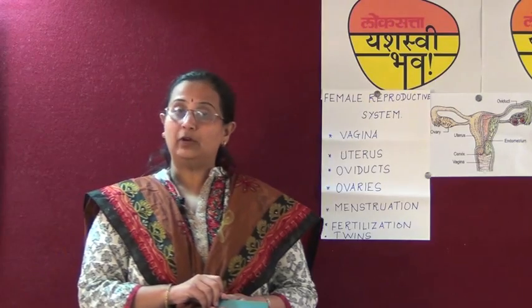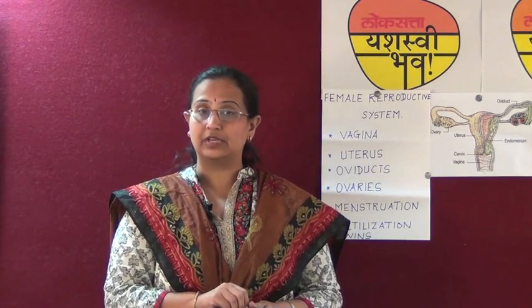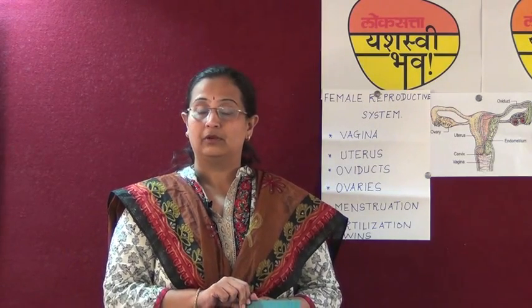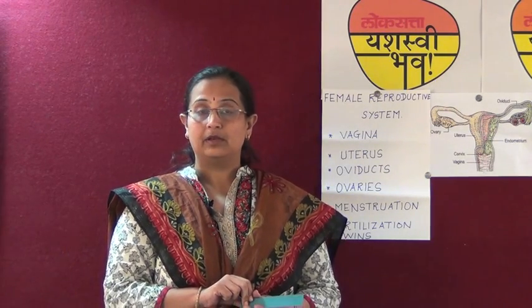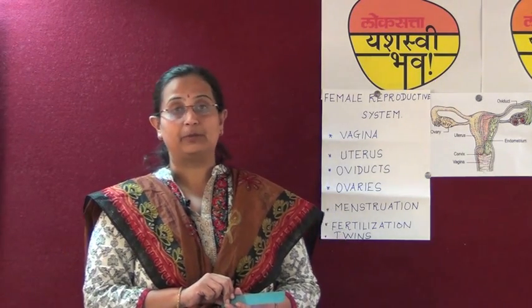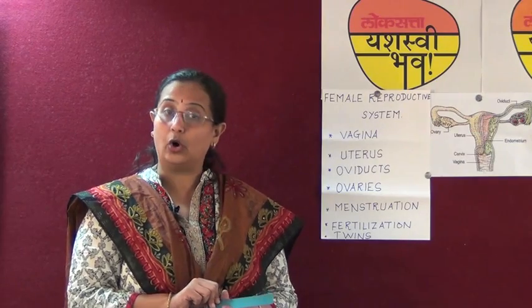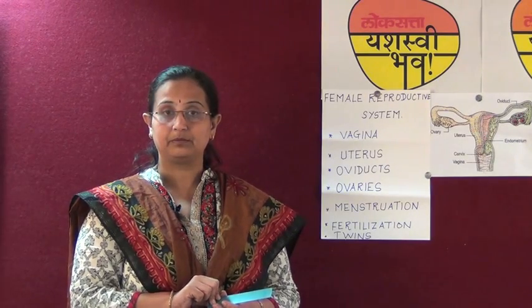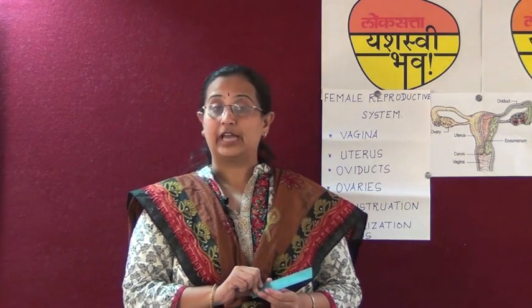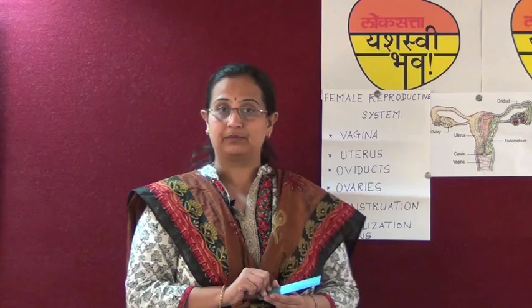This vagina allows the sperms to enter inside and reach the oviducts. The opening of the uterus is called as the cervix. Uterus is a pear-shaped muscular organ which holds the baby for 9 months.